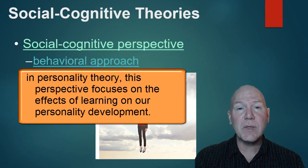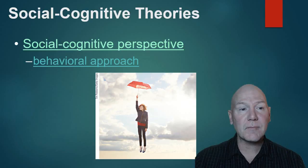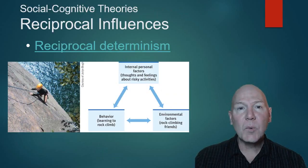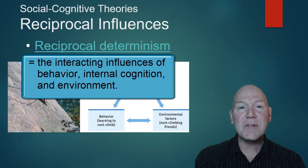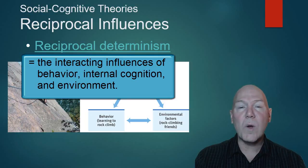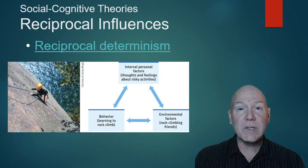With the behavioral approach, personality comes from what we learn. We observe other people doing things, and there are consequences — reinforcement or punishment — that determine how we behave. This works along the lines of reciprocal determinism, which looks at interpersonal factors, environmental factors, and behavior and how they influence one another. Reciprocal means two interacting parts that each determine the other.